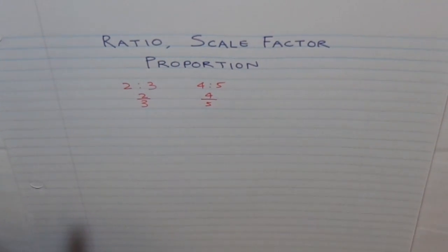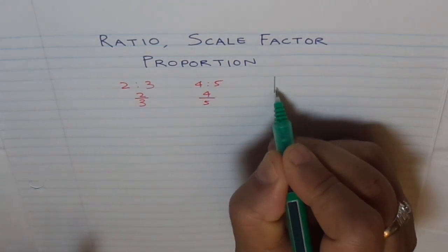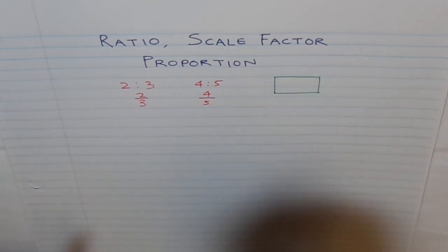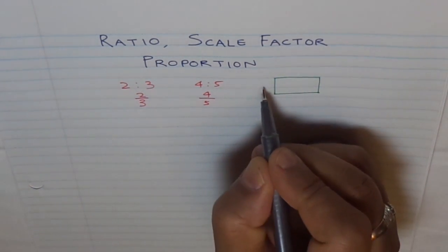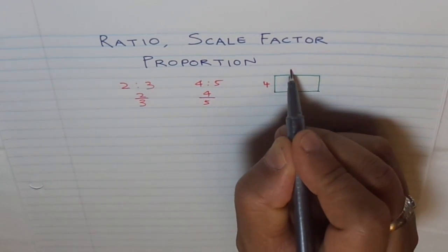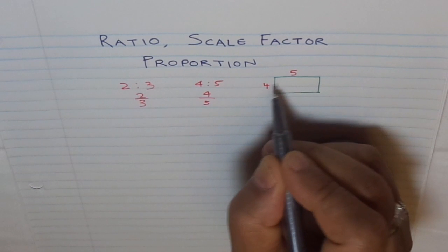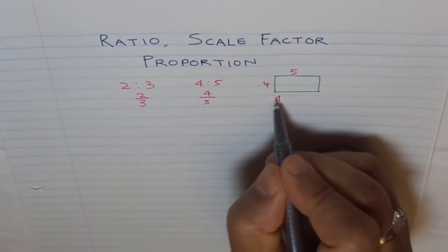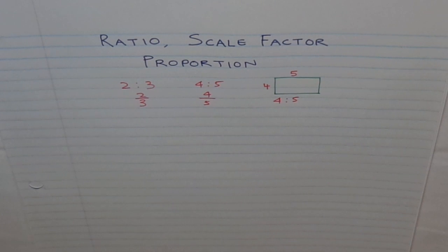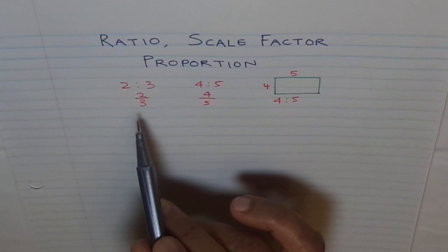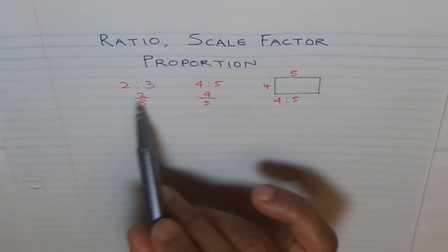In ratios, we are comparing two things, so it is not really 'out of' like fractions. For example, if we have a rectangle and the sides are in the ratio of 4 is to 5, that means the width may be 4 and the length may be 5. So ratios are different from fractions — fractions are used when you take something out of a whole.